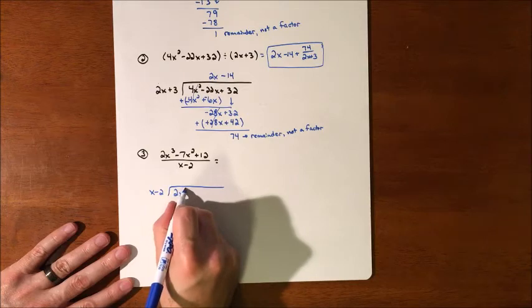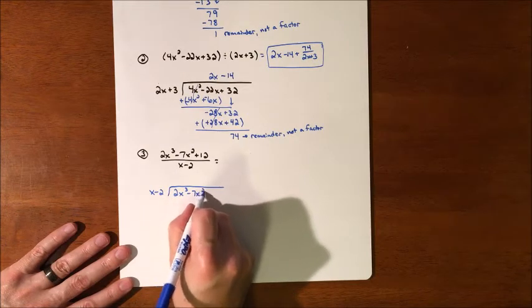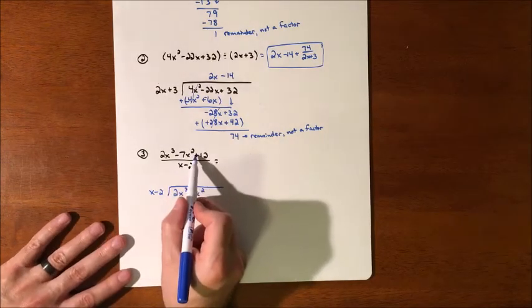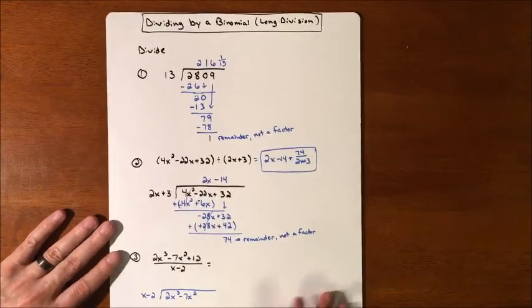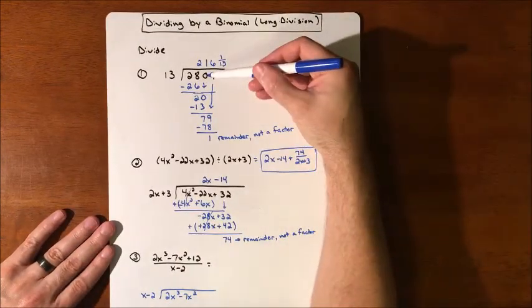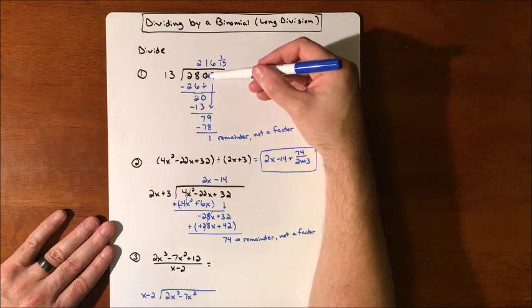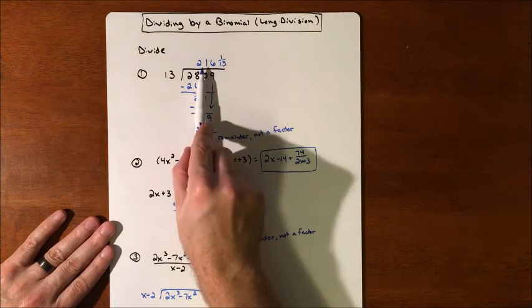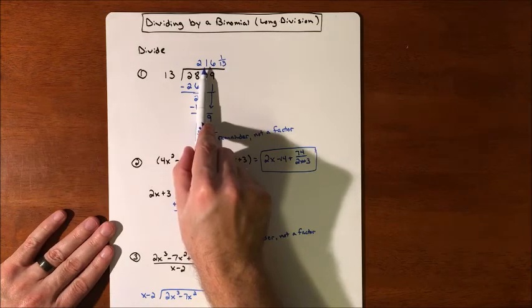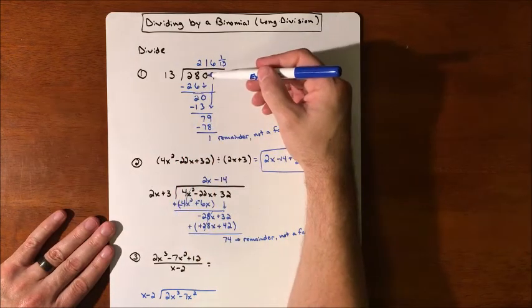We have 2x³ minus 7x². But we don't have an x. So just like up here, we didn't have a value for the tens place value. So we don't skip it. Because if you skipped it, that wouldn't be 2,000 anymore. So you have to fill it with a zero.